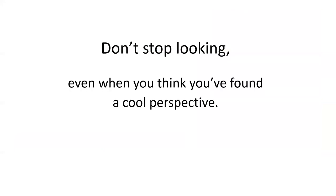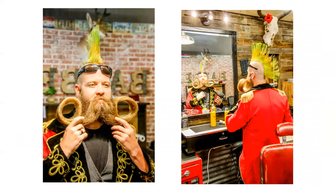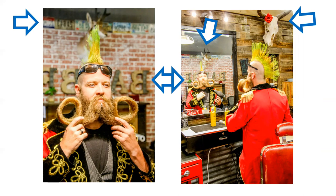Don't stop looking even when you think you've found a cool perspective. There could be an even cooler image awaiting your discovery. Many scenes have Easter eggs hidden in plain sight — note the skull with the flower, the antelope, the fresco of license plates, the barbershop sign reflected in the mirror. Both of these images contain mirror reflections of the bearded man. You notice his red coat — an international photography competition reviewed all of their past winning entries and discovered that all of their winners contained a red element.